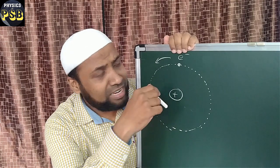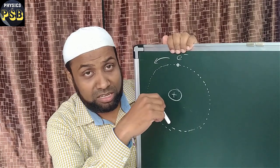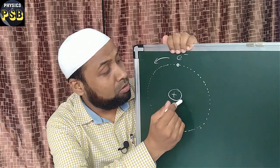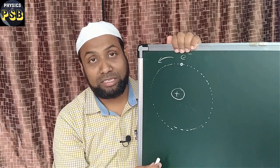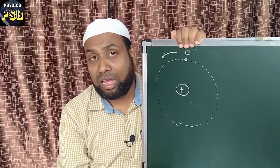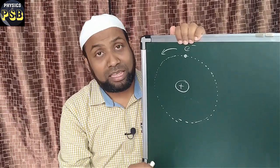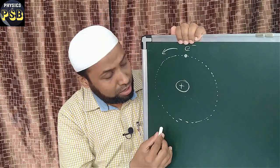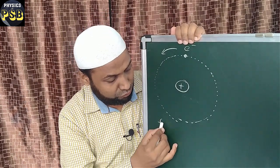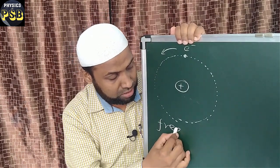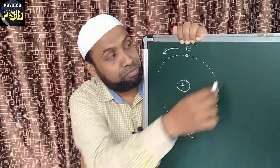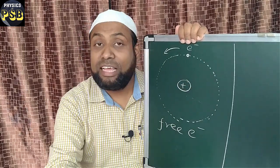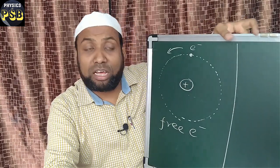In metals, there are certain electrons which are loosely bound to the nucleus. Such electrons can be removed easily from the atom. We call such electrons as free electrons. These free electrons are responsible for the conduction of electricity.